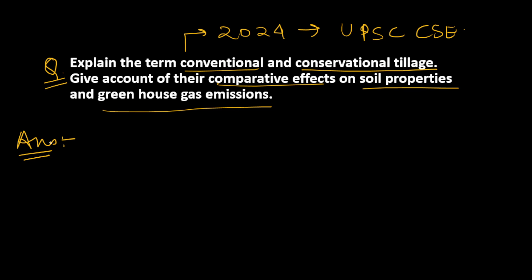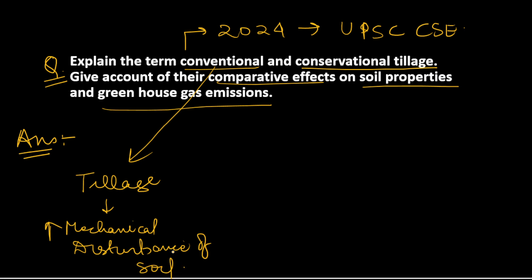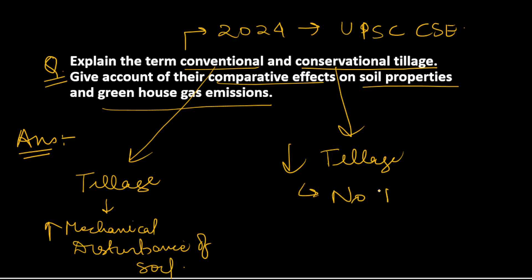The question is: explain the terms conventional and conservation tillage and give an account of their comparative effects on soil properties and greenhouse gas emissions. Conventional tillage is the normal tillage done by the farmer — it involves a lot of mechanical disturbance of soil. Conservation tillage, as the name suggests, involves very less intensity of tillage, or either no tillage, or minimal tillage.